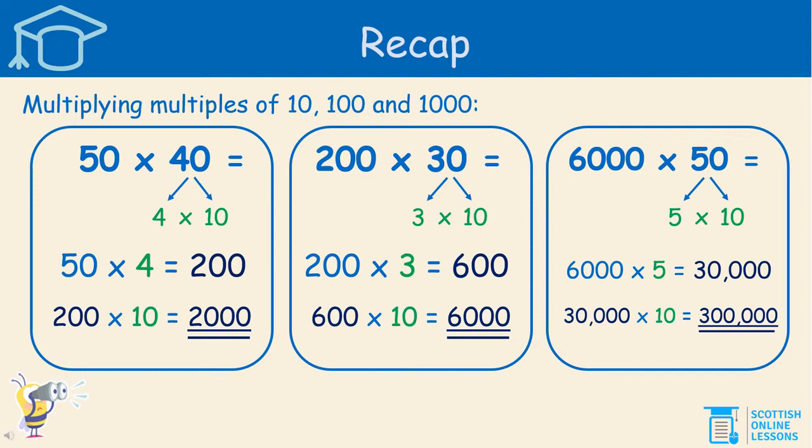A way to make this more simple for ourselves is if we say that 40 is 4 times 10 — we're splitting that 40 up into 4 times 10. Now that makes it a little bit easier, and we'll do it step by step. So, 50 times 4 equals 200 — four 50s are 200. Now, with that 200, we need to multiply it by the 10. So, 200 times 10 equals 2000. That is a way that we can find the answer.